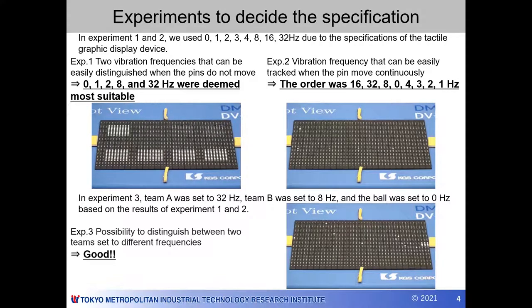As results, 0, 1, 2, 8, and 32 hertz were deemed most suitable for distinguishing two different vibrations.